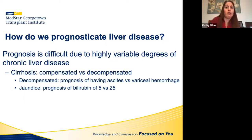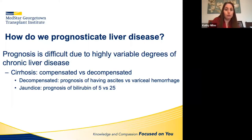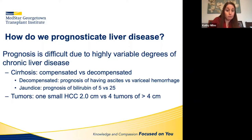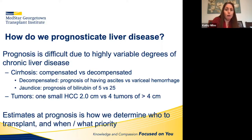Prognosticating liver disease is very difficult because chronic liver disease is very variable. Whether a patient with cirrhosis is compensated versus decompensated makes a significant difference in survival. Even within decompensated patients, someone with ascites versus someone who has had a variceal hemorrhage is very different. If your bilirubin is 5 versus 25, that's a completely different prognostic picture, and one small HCC versus multifocal HCC is very different. We estimate prognosis to figure out who to refer to transplant and when, but it's not a perfect system.